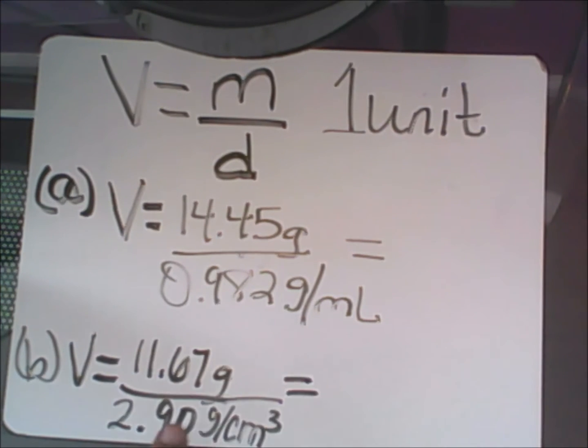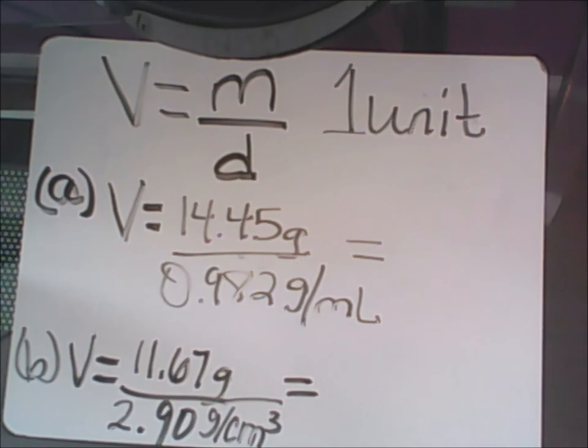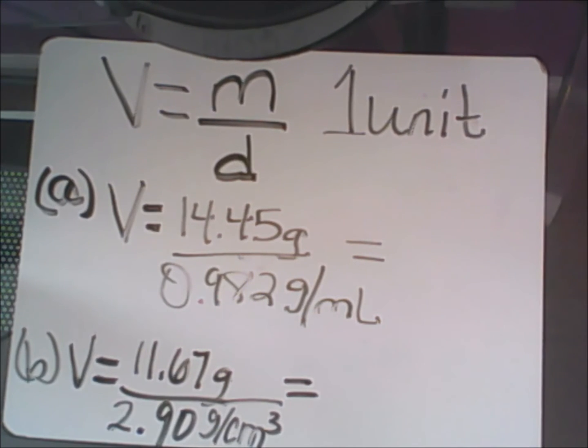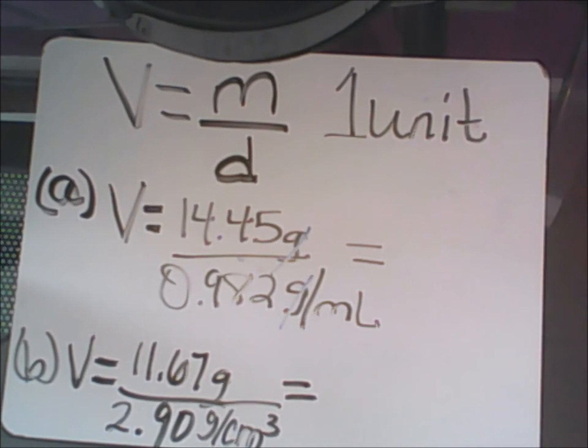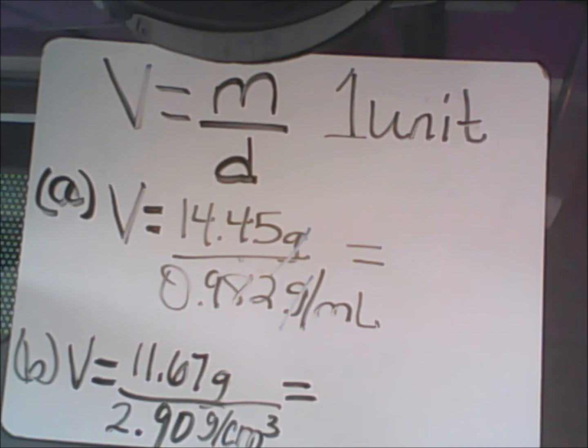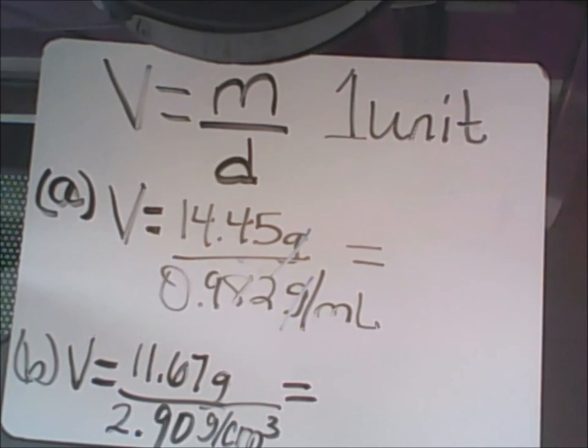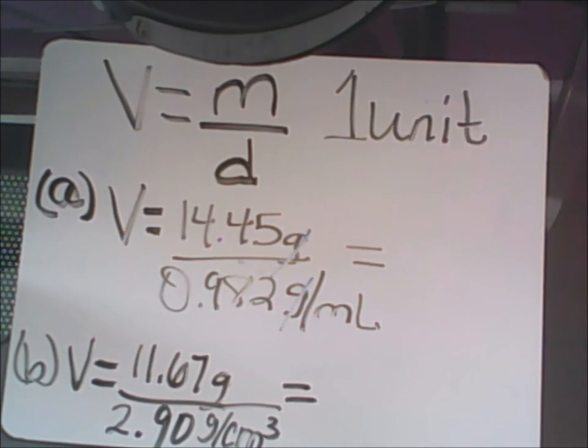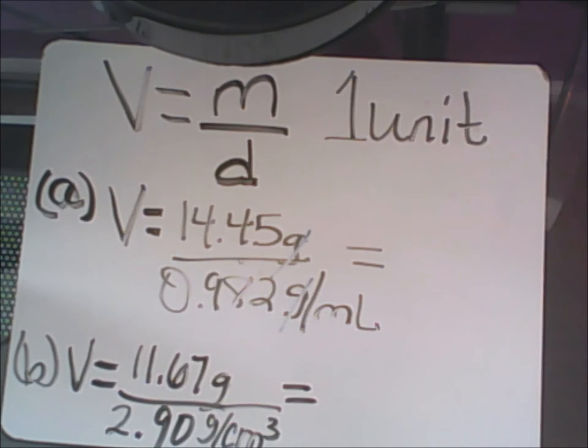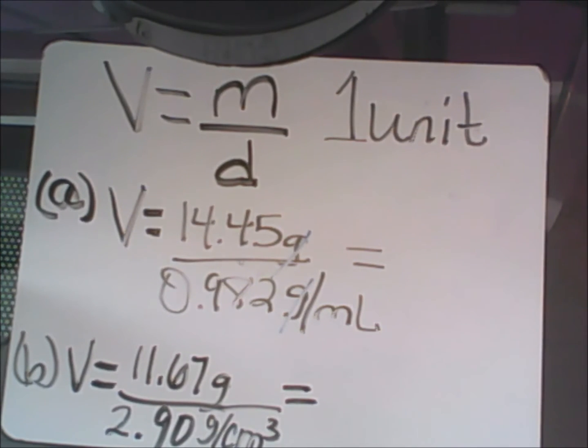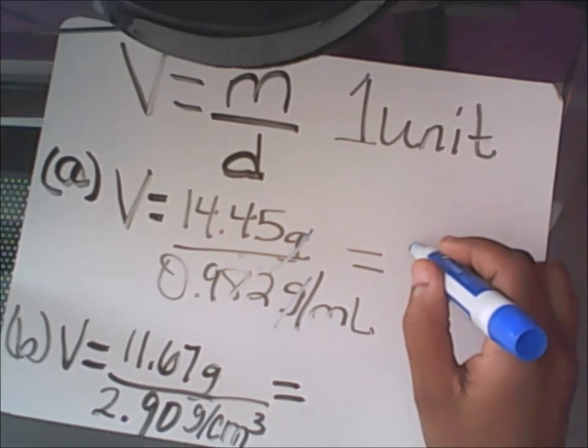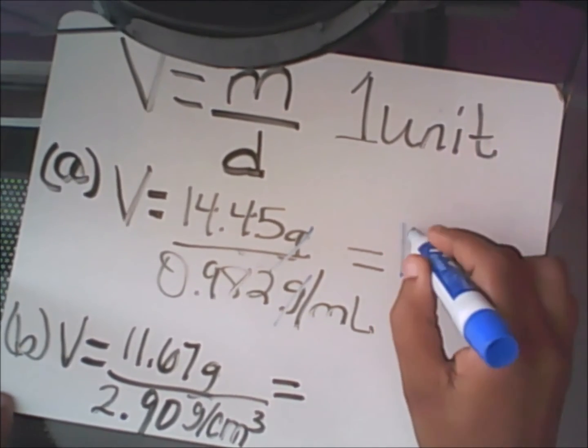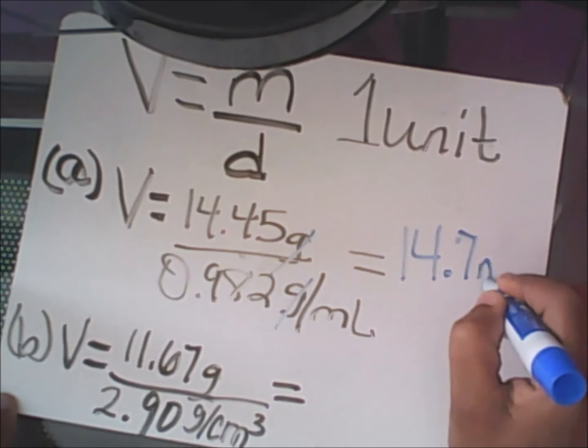Two units look the same—the grams—therefore I cancel them out. When we talk about volume, we know that volume has a unit of liters, milliliters, cc's, and so forth. So I would not have a gram anywhere in my final unit answer. I have four significant digits on the top, three significant digits on the bottom, therefore my final answer would have to have three significant digits. Once I plug this into my calculator, I get 14.7 milliliters.